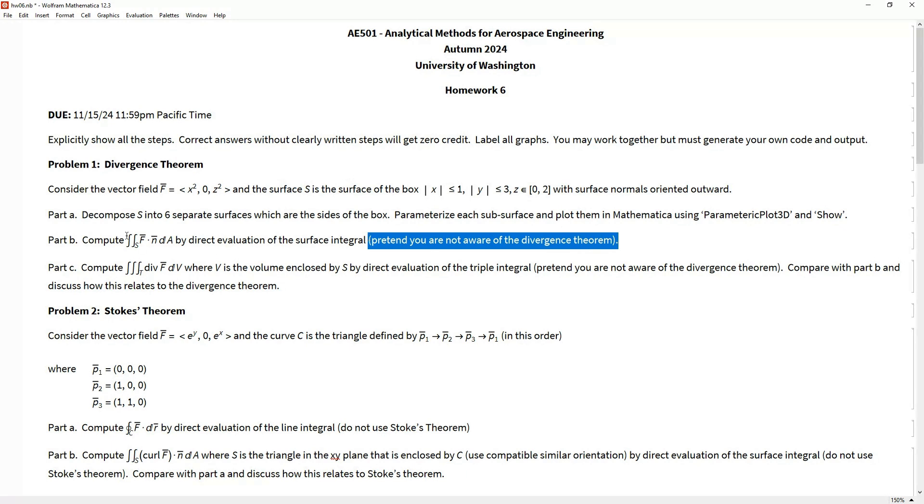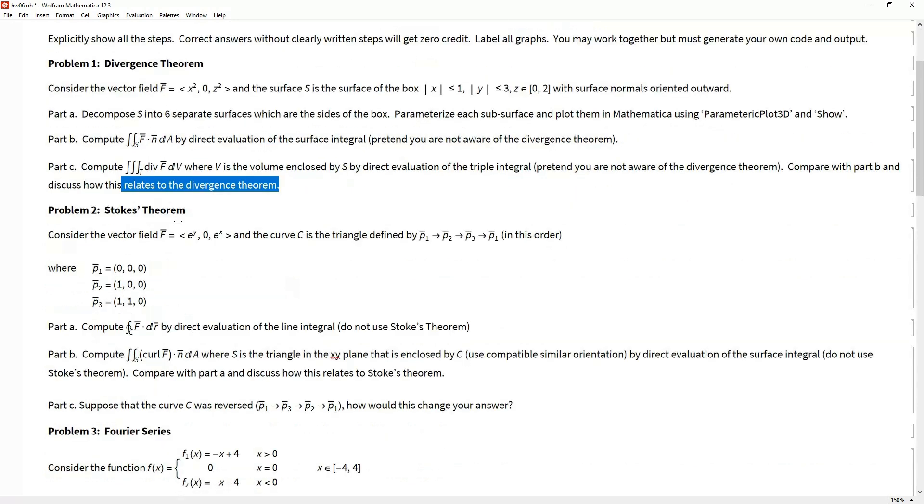We're going to pretend that you don't know what the divergence theorem is and just blindly calculate by brute force this surface integral. Then in part c we're going to compute this triple integral of the divergence of this vector field over this volume that's enclosed by this box, and I'd like you to compare your results from part c with part b and tell me how that relates to the divergence theorem.